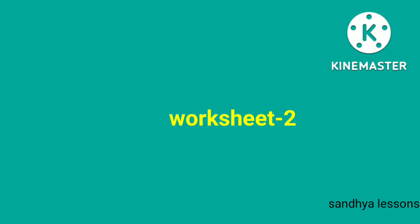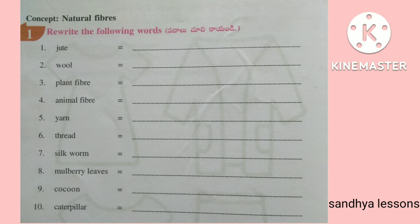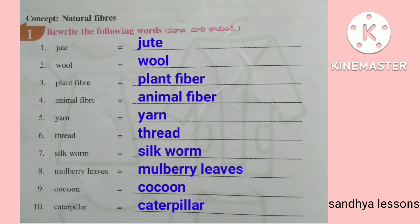Worksheet 2. Rewrite the following words: Jute, Wool, Plant Fiber, Animal Fiber, Yarn, Thread, Silkworm, Mulberry Leaves, Cocoon, Caterpillar.